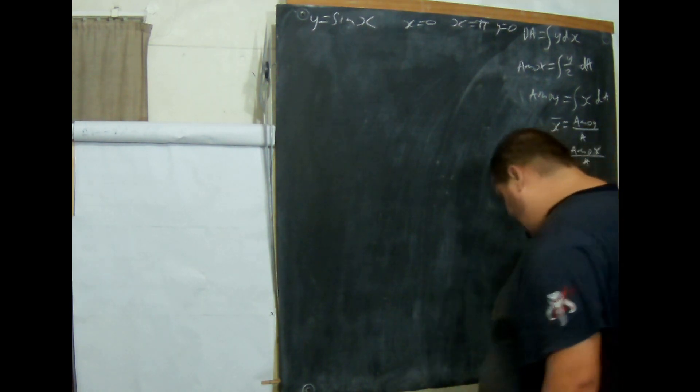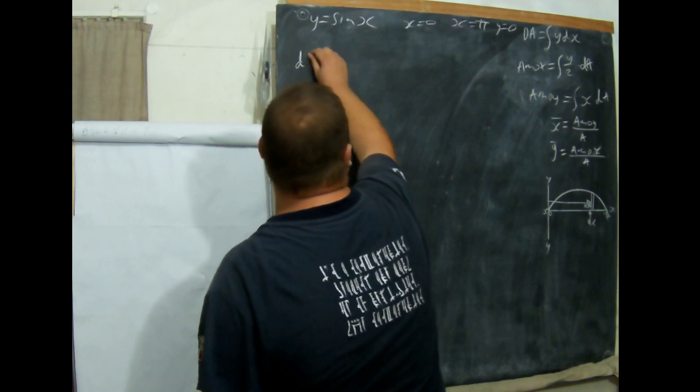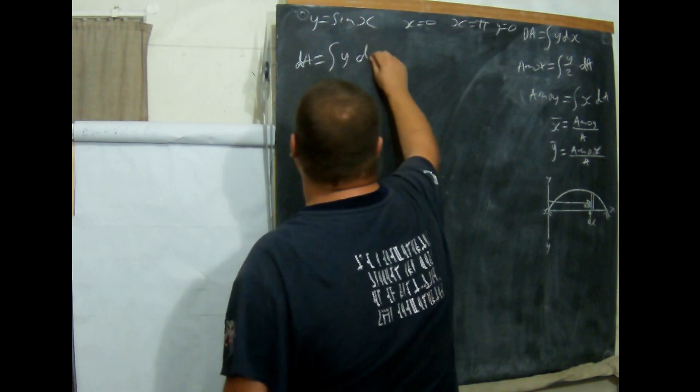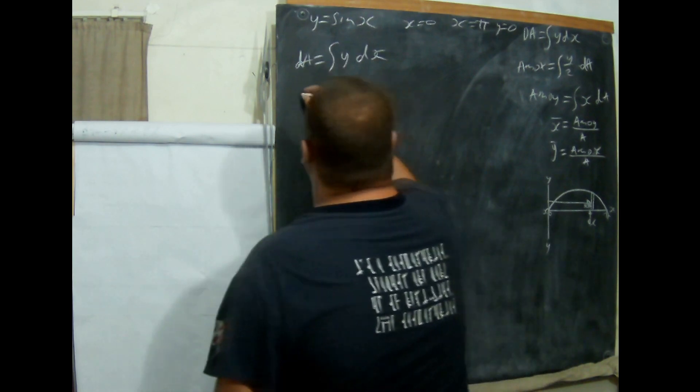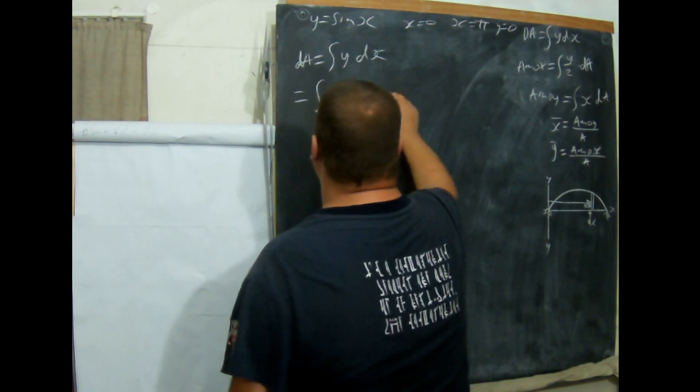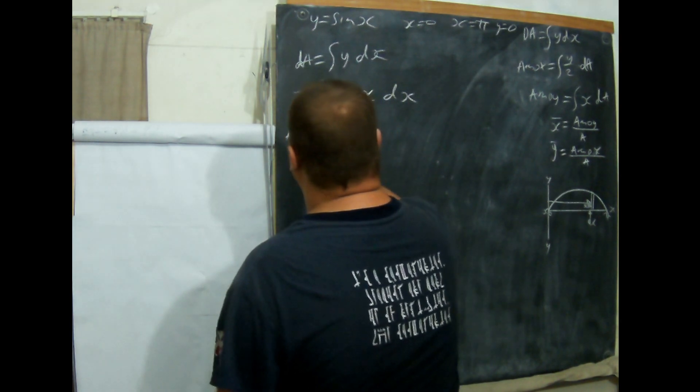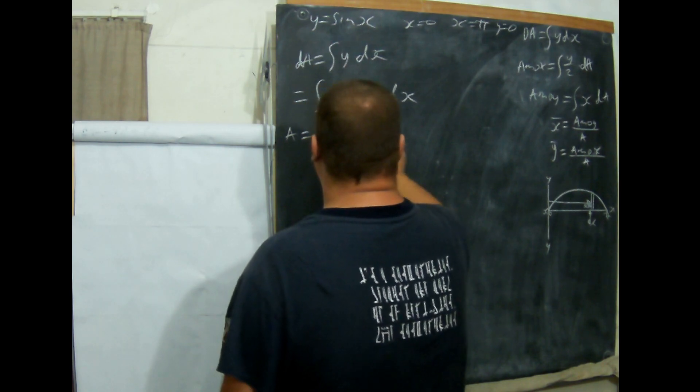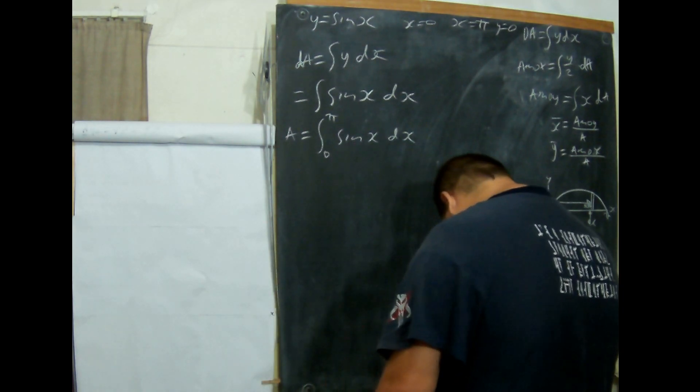Now we're going to work at dA. dA equals the integral of y dx, which is pretty straightforward. So it is the integral of sin x dx. The area equals pi sin x dx.